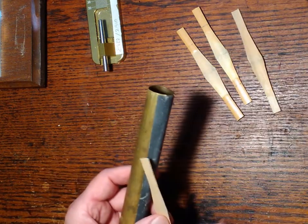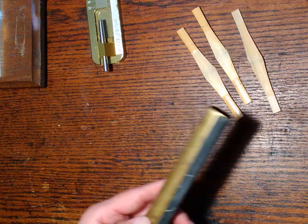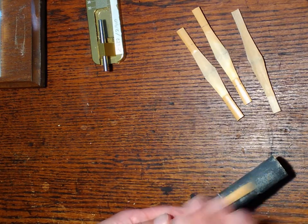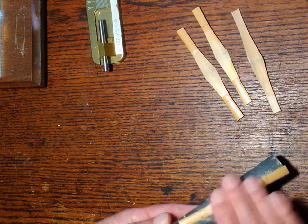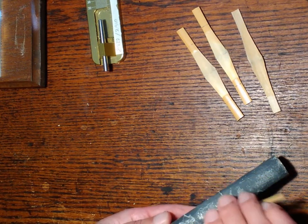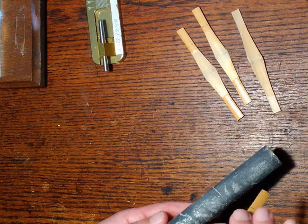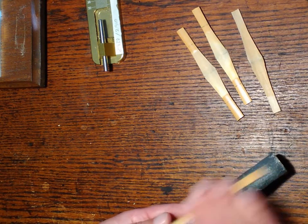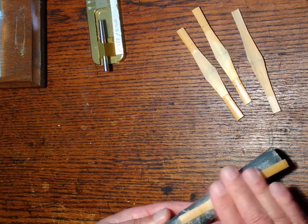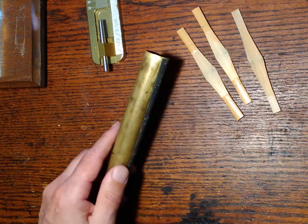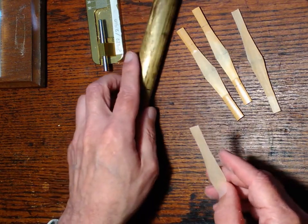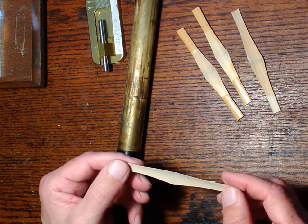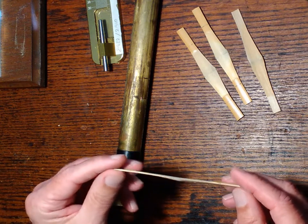So again, I'm just taking a piece of cane, putting it on my sandpaper and rubbing, reversing the direction. And now it's much smoother and the blades will fit together much more nicely when the reed is finally done.